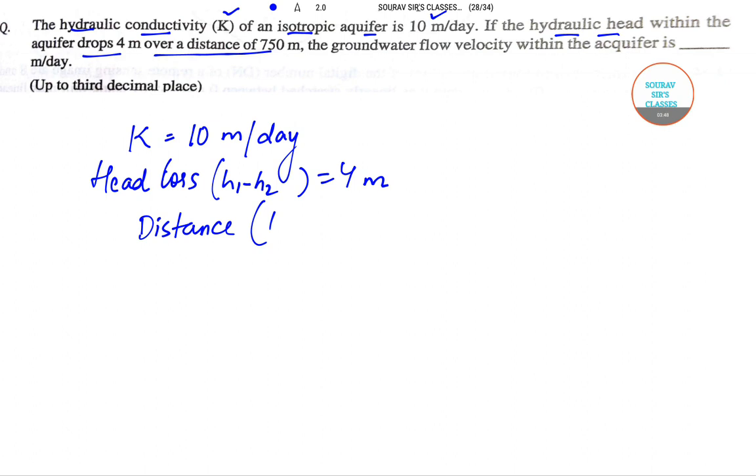Over a distance of 750 meters, I'll denote distance using the symbol L, so L is 750 meters. We need to calculate the groundwater flow velocity within the aquifer, up to three decimal places.